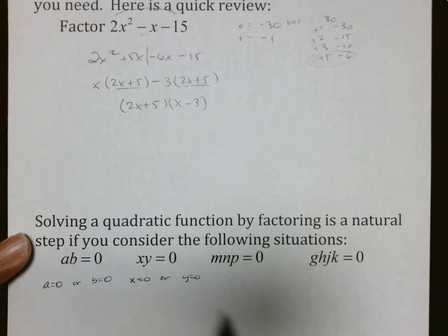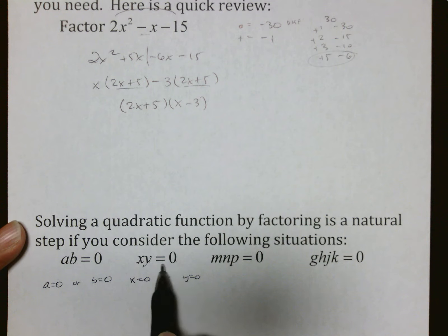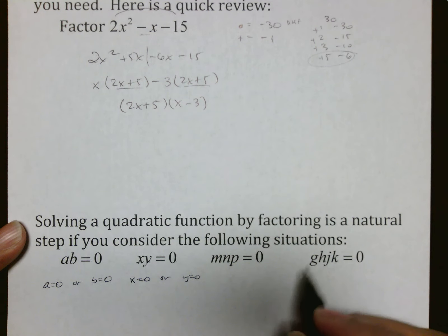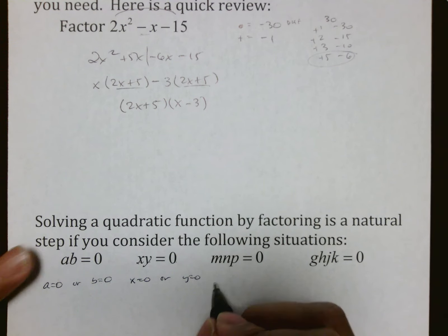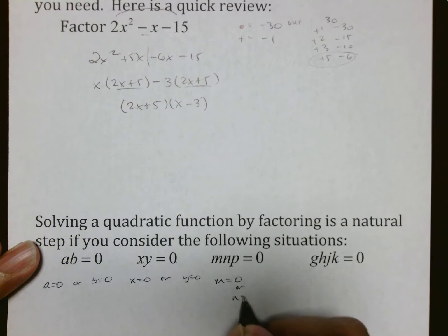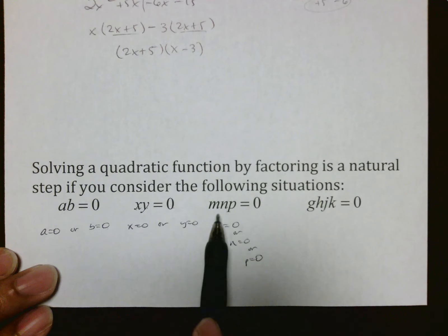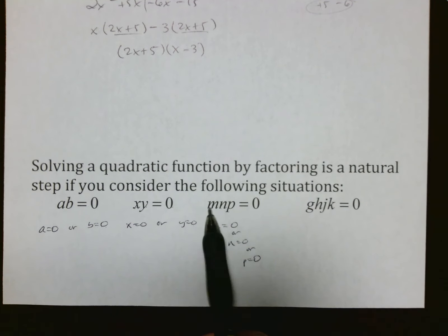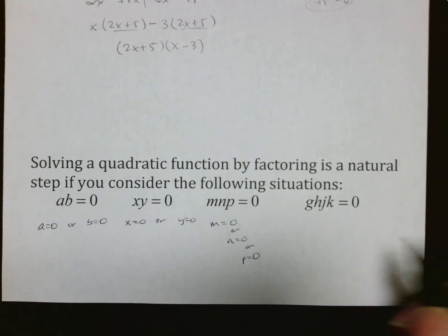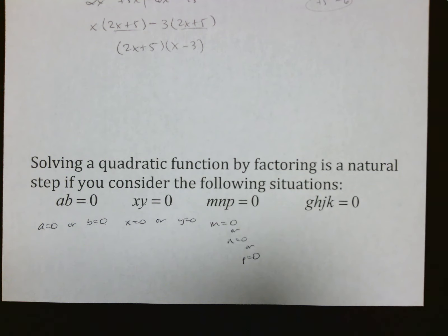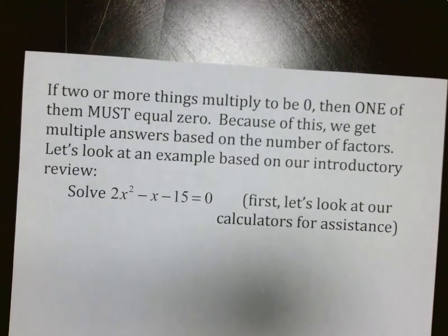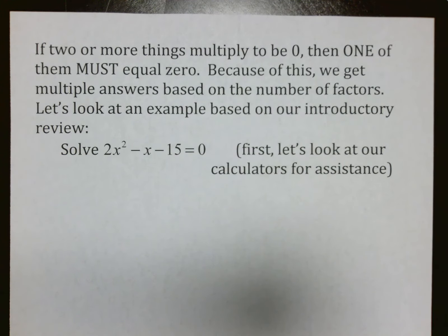As long as one of the factors is 0, we don't care what the other is. Even with three factors — M times N times P equals 0 — that means M equals 0, or N equals 0, or P equals 0. Expand that out to four things multiplied, and it keeps going. This is all based on the concept that if two or more things are multiplied to be 0, then one of them must equal 0. Because of this, we get multiple answers based on the number of factors.